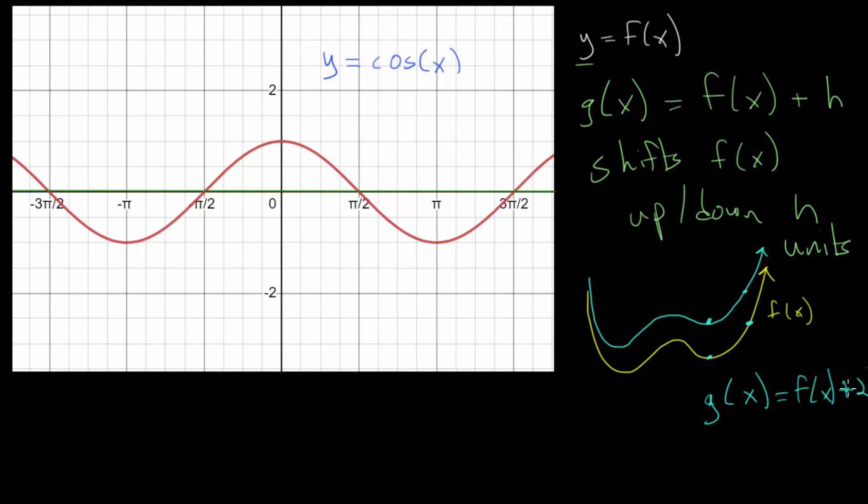all the y values will now be two units higher. And likewise, if we subtract five or any constant, that will shift the entire function f of x, this yellow curve, down five units or whatever that subtraction was.